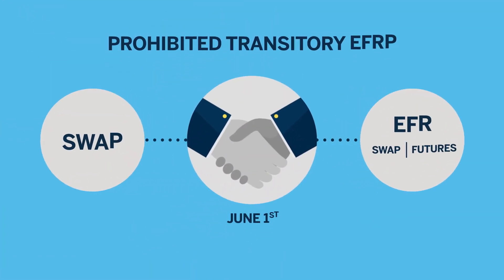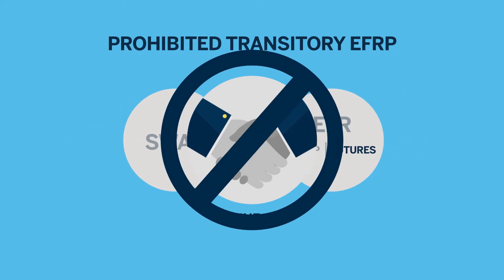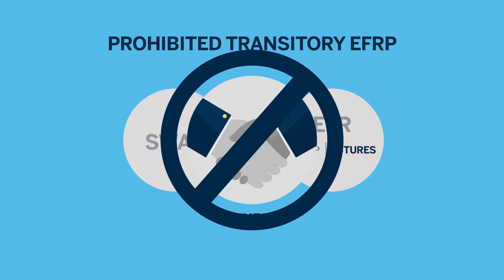Let's look at an example. Two participants agree to enter into a swap and, as part of the same negotiation, agree to immediately offset that swap by transacting an exchange for risk, or EFR. The economic effect is that the two swap legs cancel out, and participants are left solely with the futures contract. In that transaction, the swap legs have not incurred market risk that is material, and therefore this would be an impermissible transitory EFRP.